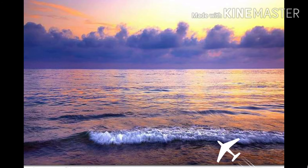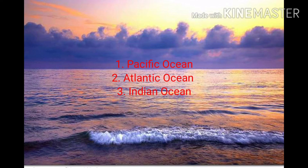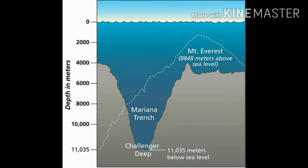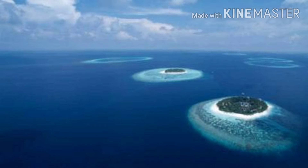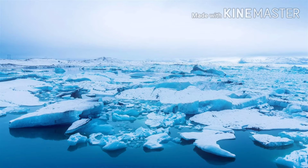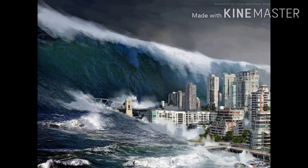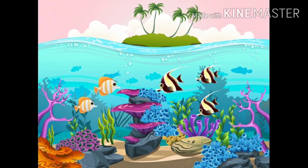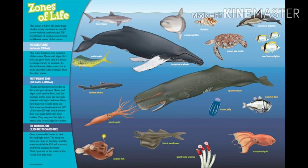The largest and deepest ocean in the world is the Pacific Ocean, followed by the Atlantic Ocean, and the third one is the Indian Ocean. The Mariana Trench in the Pacific Ocean is the deepest point on the earth's surface. All the oceans are connected to each other. The Arctic Ocean remains covered with snow during winters. Earthquakes that occur under the sea lead to the formation of huge tidal waves called tsunami, that can cause a lot of damage inland. Oceans are home to a variety of plants and seaweed and thousands of sea creatures like whales, dolphins, sharks, octopus, etc.